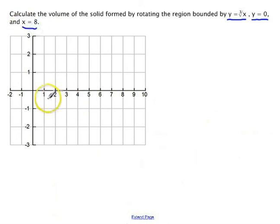So the cube root of x is going to go from 0, 0 through 1, 1, and 8, 2. So it's going like this.